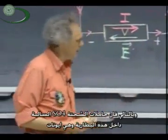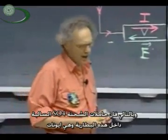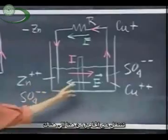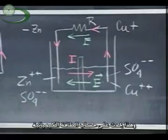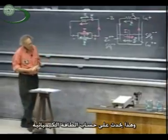So the charge carriers inside this battery, the SO4 minus ions, travel through this barrier, and they go from here to here. So they travel through the electric field that opposes their motion, and this happens at the expense of chemical energy.